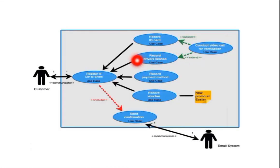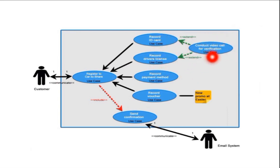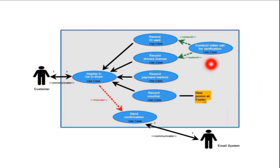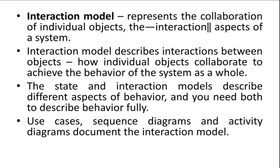So every customer interacting with the software — those interactions are shown in the use case diagram. For example, after submitting details, a video call can be conducted for verification to check whether all the details submitted by the customer are correct. These interactions — how a customer is going to interact with the car share system, record the ID card, record the license, make payments — those interaction details are shown by use cases and sequence diagrams, which are interaction models.